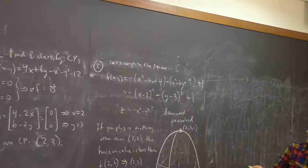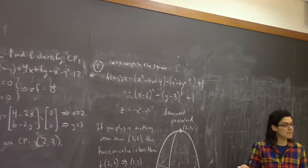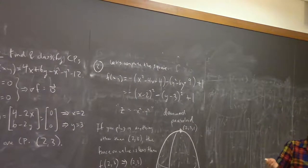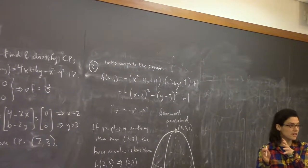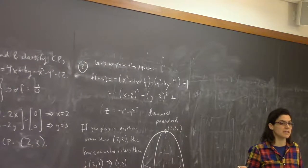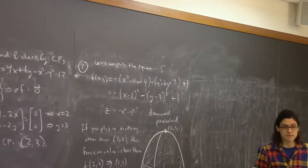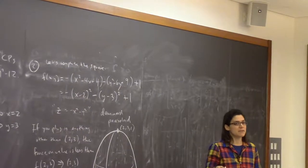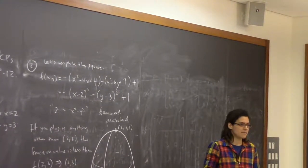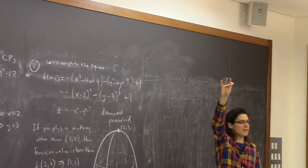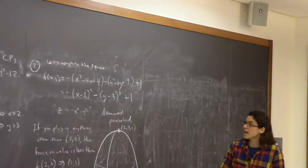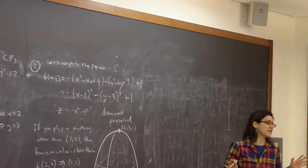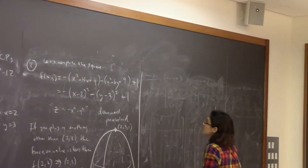You might be wondering — this complete the square approach seems a little ad hoc; maybe it won't work every time. Maybe there's something more systematic. For example, in single variable calculus we had a second derivative test: find critical points and plug them into the second derivative test to determine max or min. Maybe there's something like that for multivariable calculus — and there is. There's a multivariable second derivative test. But first, let me remind you about the single variable calculus second derivative test, both because it may have been a while and because you might not have understood why it worked.